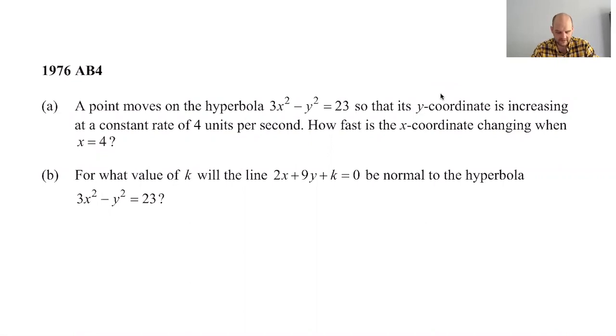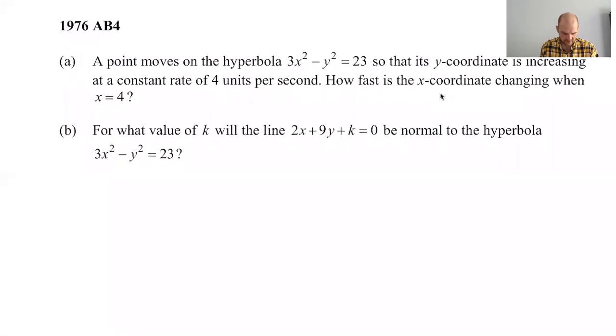So let's take a look. A point moves on the hyperbola 3x squared minus y squared equals 23, which I don't think you really need to know how to graph to do this problem, but it kind of, it's one of these guys, right? Kind of like eating the x-axis is how I refer to that. So it's moving so that its y-coordinate is increasing at a constant rate of four.